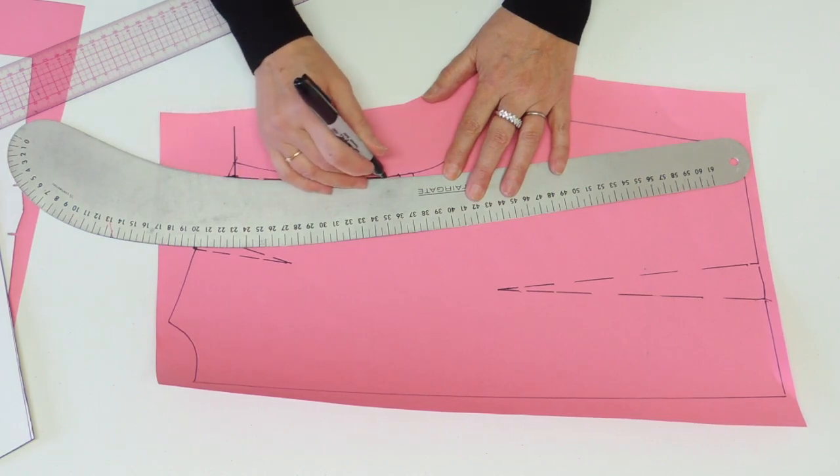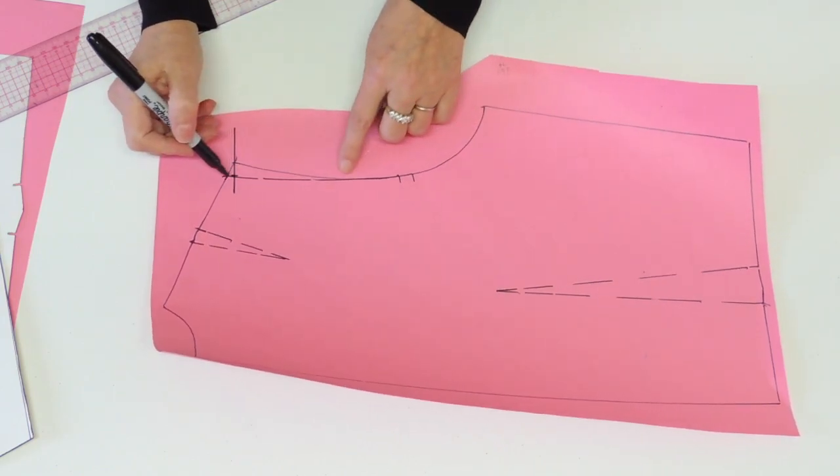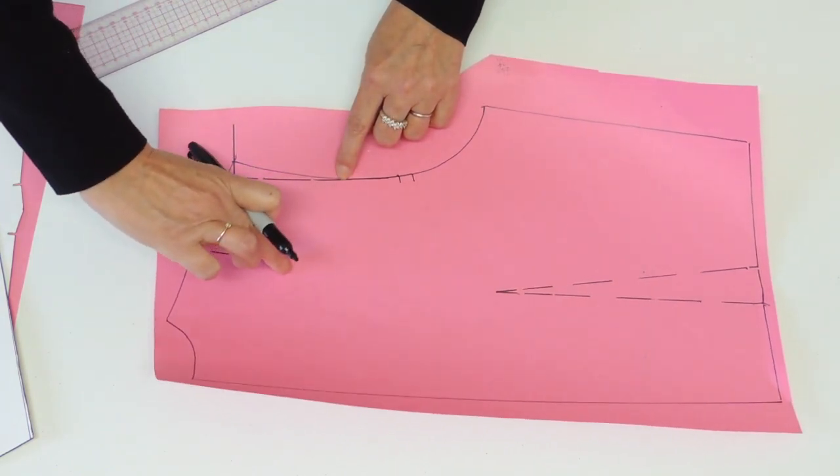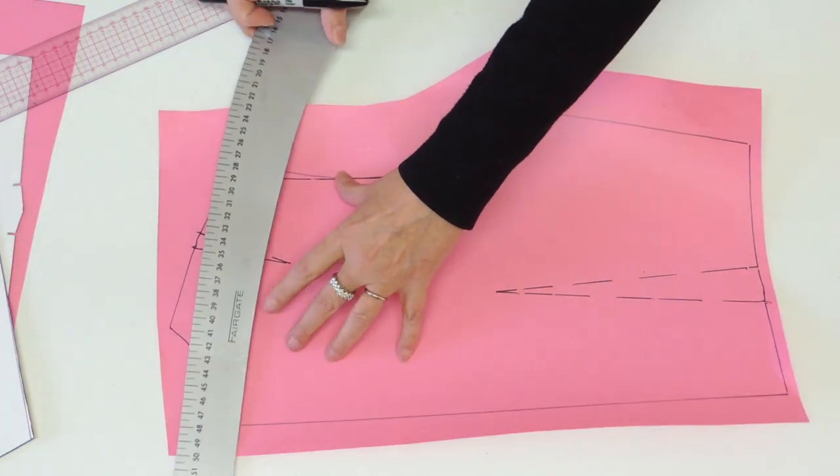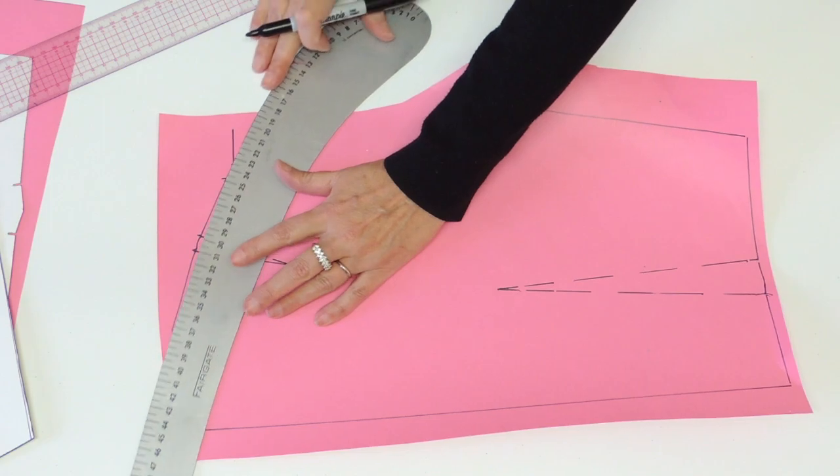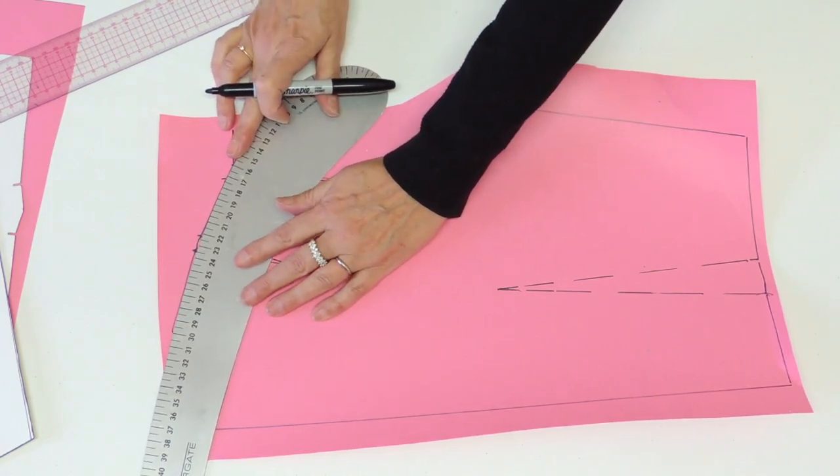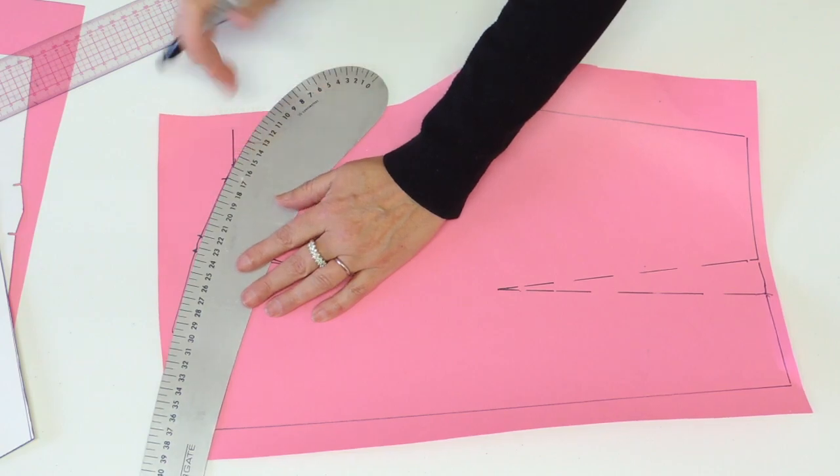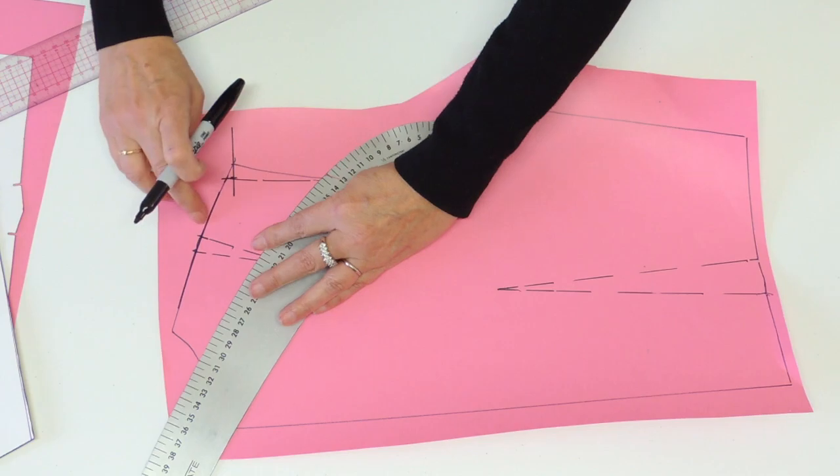So you have a continuous armhole and you remove pretty much the same length as your original dart. Now the last thing to do is to soften the shoulder. So keep it curved because you do have ease in your back shoulder. You don't want to lose it.